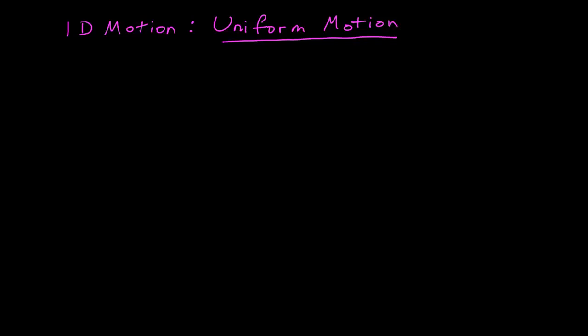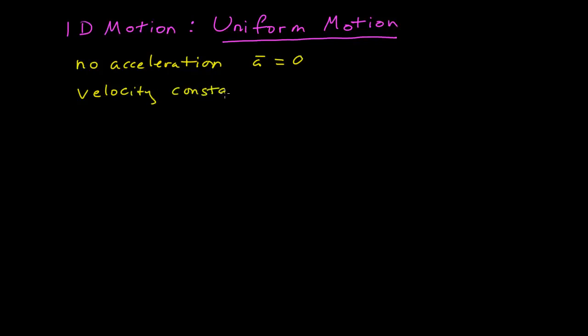Now that we're looking at motion in more detail, we want to limit ourselves to one-dimensional motion and just take a look at this simplified picture for a while. In the first module, we want to talk about uniform motion. What uniform motion means is that there is no acceleration. Our acceleration vector is equal to zero, and since the acceleration tells us how the velocity is changing, if there's no acceleration, that means the velocity is constant. I can describe the velocity as a single, unchanging vector.